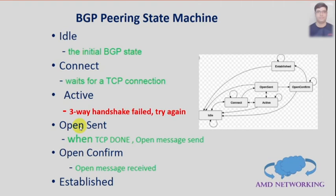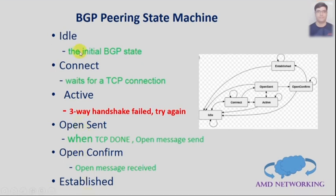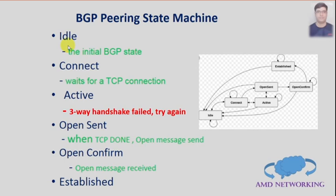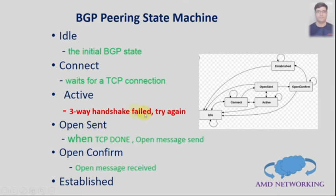In the BGP peer state machine there are six different states: Idle, Connect, Active, Open Sent, Open Confirm, and Established. In the Idle state, it waits for the three-way handshake to start and transitions from Idle to Connect. In the Connect state, it waits for TCP connection establishment via three-way handshake. If the three-way handshake fails, it moves from Connect to the Active state. In the Active state, if the three-way handshake completes, it goes directly to Open Sent.